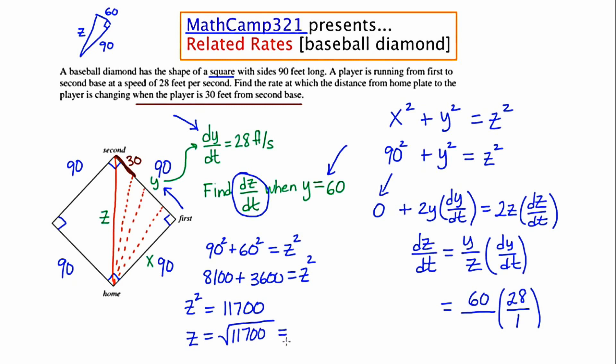Now I'm trying to do this without the calculator and I see that I can take out a 100. 11700 can be thought of as 100 times 117, which leaves me with 10 root 117. But 117 is really 9 times 13. So what this means is that in the end, z is equal to 30 root 13.